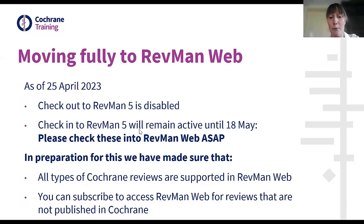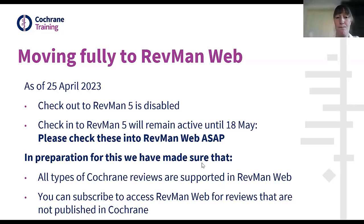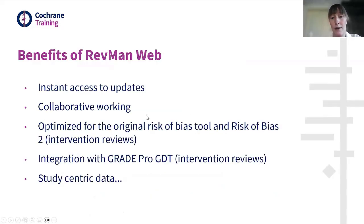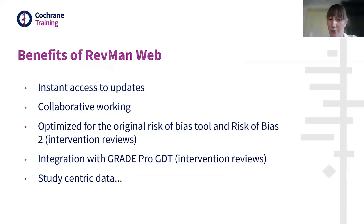In preparation for this, we've made sure that RevMan Web supports all Cochrane review types and that you can subscribe to access RevMan Web for reviews not published in Cochrane. Moving to a web application was based on feedback from users and the need to respond to changes in review process and content fast. By only supporting a web application, new feature developments will be much quicker and available directly when you log in. Planned 2023 improvements include changes to review structure and subheadings, template functionality for different review types, and new statistical methods for random effects.